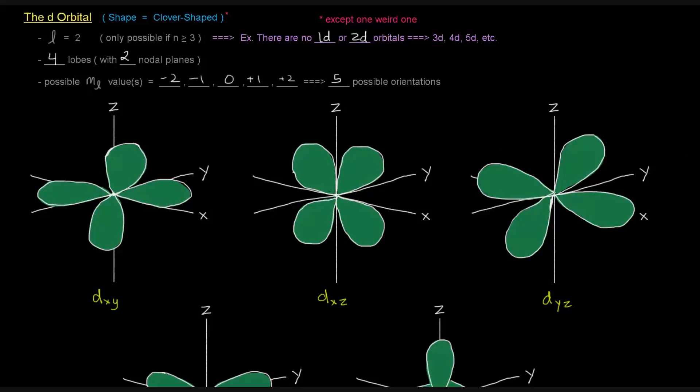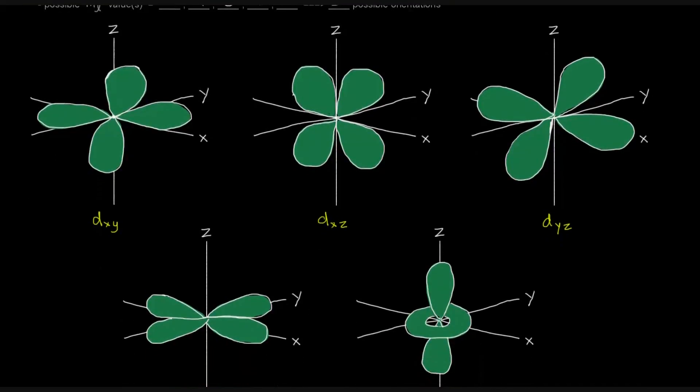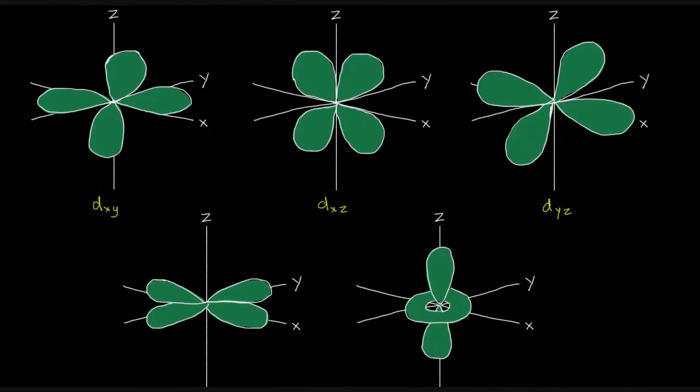Now, my representations are not perfect. They're nowhere near perfect, but they just kind of give you an idea of how these things are shaped. And there are two nodal planes, which I did not show, because it got really, really messy.